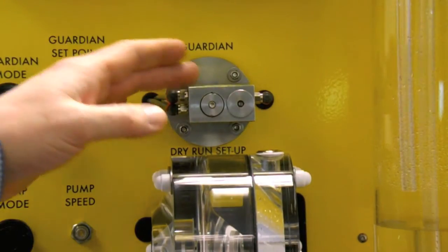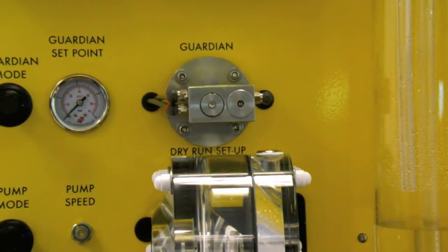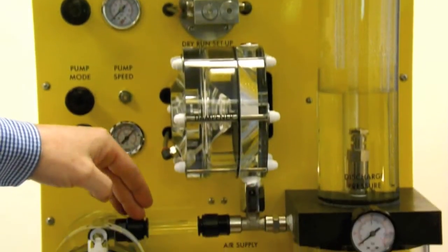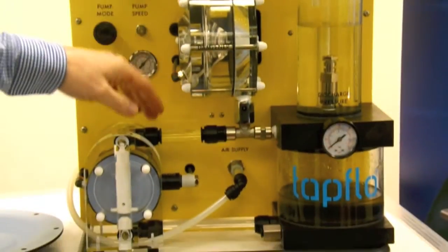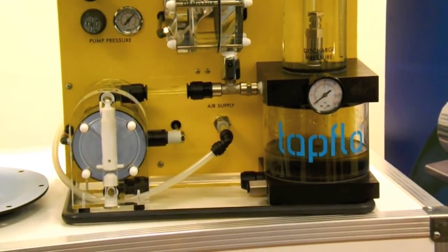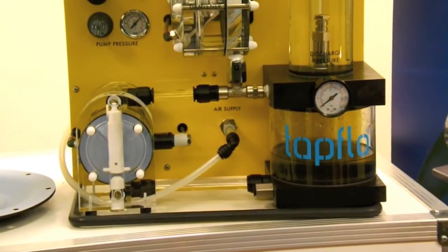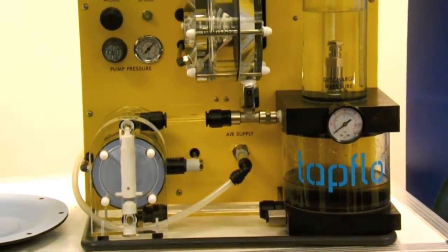Now the one we have set up here today is for dry run protection. So here what the guardian is doing is it is piped into the discharge line of the pump and it is monitoring the discharge pressure. So you can see here I have set the discharge pressure for the guardian to react at as 20 psi.